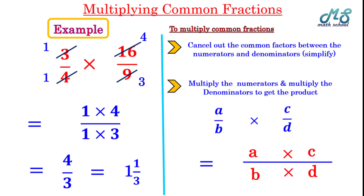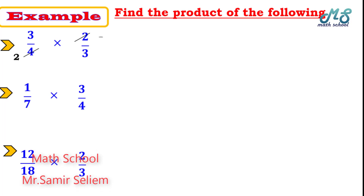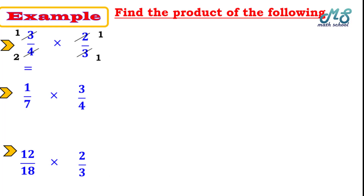Example one: find the product of 3 over 4 times 2 over 3. 4 is divisible by 2, so divide by 2: 4 divided by 2 equals 2 and 2 divided by 2 equals 1. We can also cancel 3: divided by 3 equals 1 and divided by 3 equals 1. Now multiply the remaining factors: 1 times 1 over 2 times 1 equals 1 over 2, which is one half.